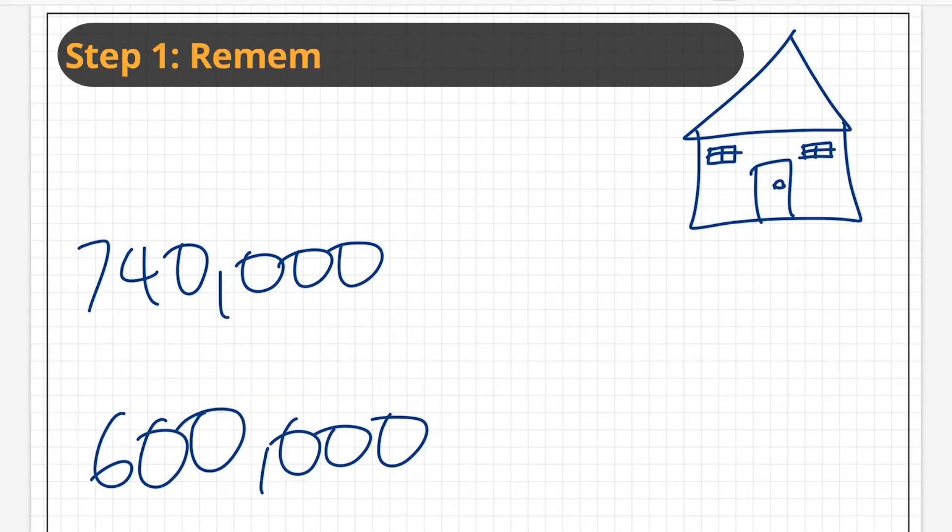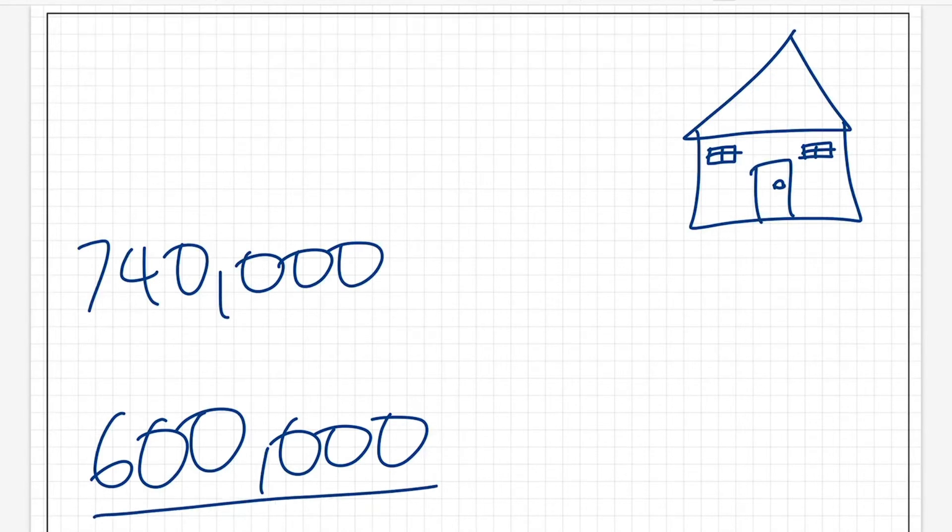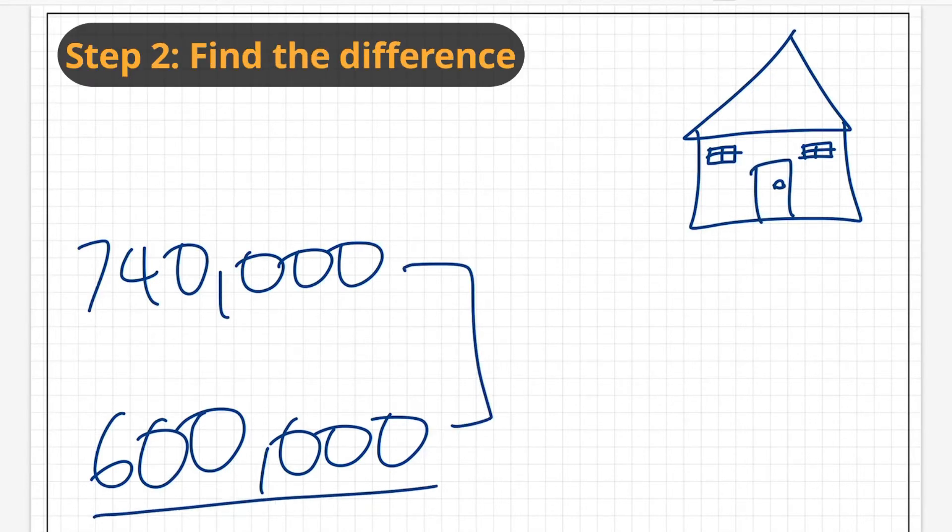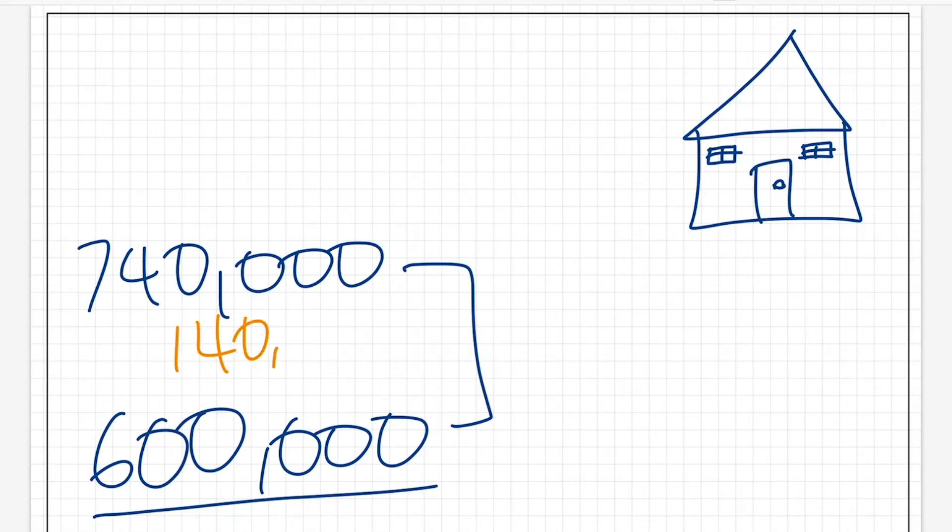When we get a question like that, it's important to remember the original amount. We need to work out the difference between the two values, and when we do that, we end up with an amount of $140,000.